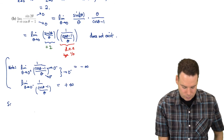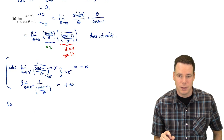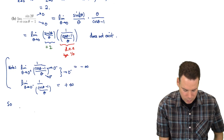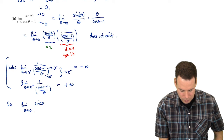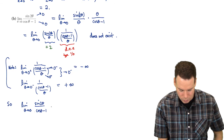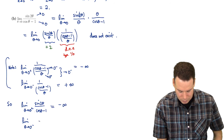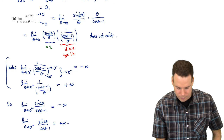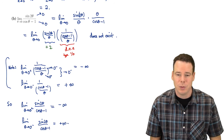So even though our original limit doesn't exist, we can be specific as to why. The values are blowing up, but it depends on which direction you come from. In particular, the limit of sine 2 theta over cos theta minus 1 as theta goes to 0 from the right is negative infinity, and from the left is positive infinity. That's it for this section — thanks very much for watching and we will see you again next time.